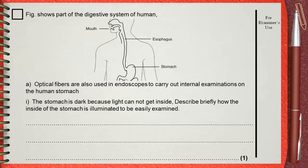Figure shows part of the digestive system of human. Optical fibers are used in endoscopes to carry out internal examinations on the human stomach. The stomach is dark because light cannot get inside. Describe briefly how the inside of the stomach is illuminated to be easily examined.